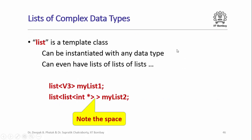So far we have seen lists of simple data types like strings or integers, but the list class is a template class and can be instantiated with any data type. You can even have lists of lists. For example, here is a list of the three-dimensional vector class V3 studied earlier, and another list named MyList2 which is a list of integer pointers. You can also use a list itself as the data type for another list. When doing so, note that a space between the two closing angle brackets is important — omitting it would make them appear as the >> streaming operator, which is not what we want.